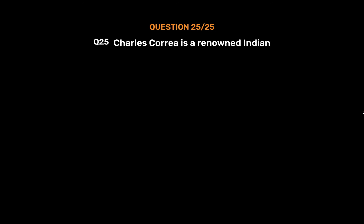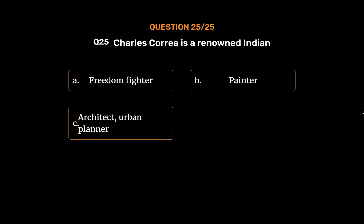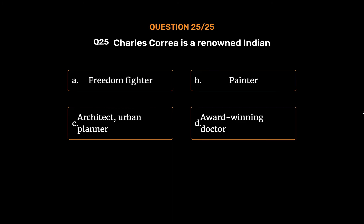Question No. 25. Charles Correa is a renowned Indian: Option A: Freedom fighter. Option B: Painter. Option C: Architect, urban planner. Option D: Award-winning doctor.